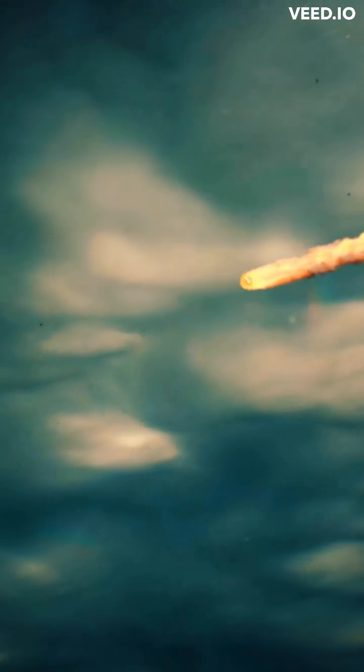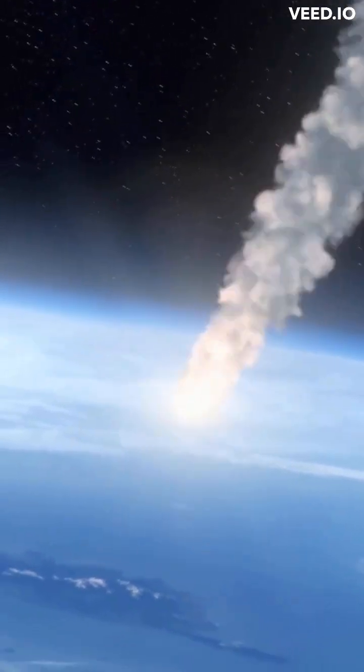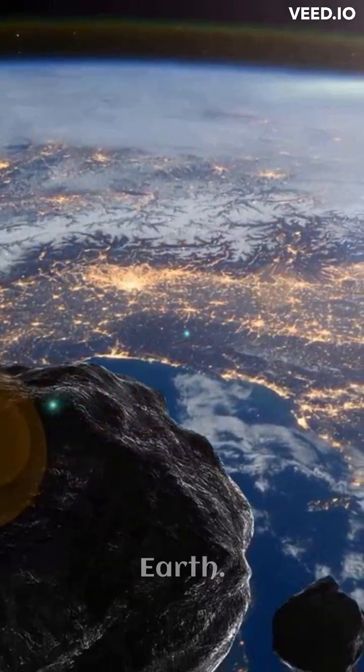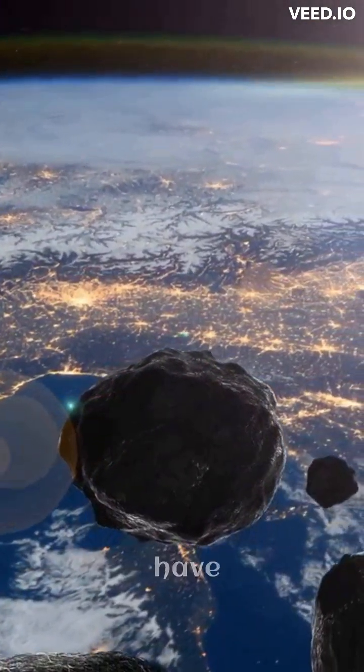Meteorites are fascinating objects that have landed on Earth from space. Here are some interesting facts about meteorites. A meteorite is a piece of space rock that has landed on Earth. These space rocks are mostly fragments of asteroids that have broken up.